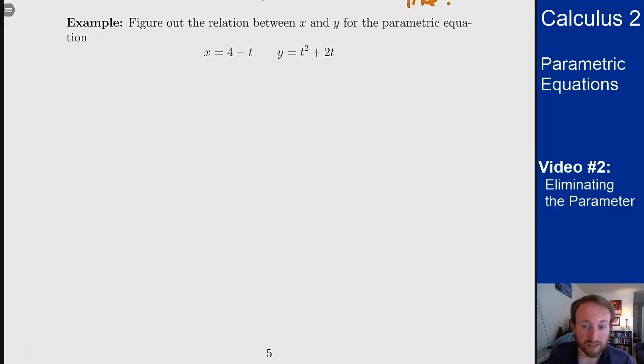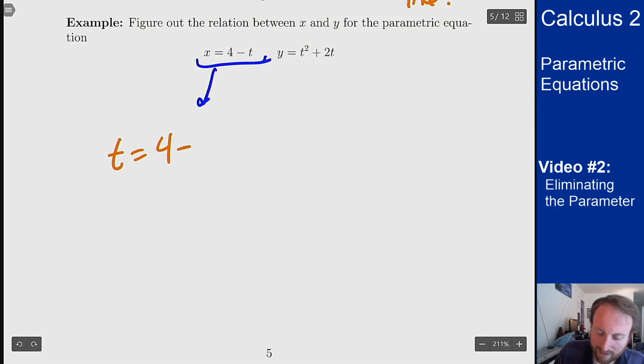So our main trick here is going to be to isolate t in one equation and then plug that into the other. What we're going to do is solve out for t in the x equation. So this equation gives me that t equals 4 minus x, and then what I can do is take that and plug it into this equation to now get y as a function of x.